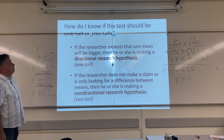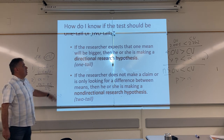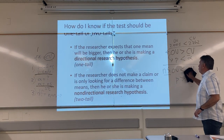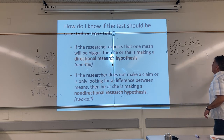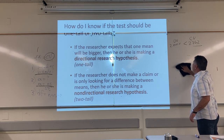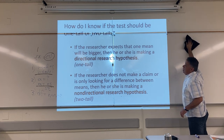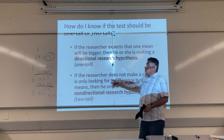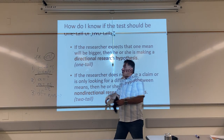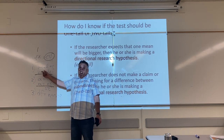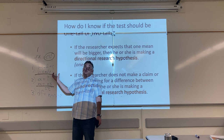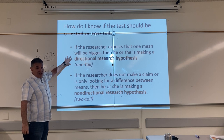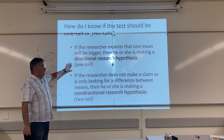How do I know if the test should be one-tail or two-tail? If the researcher expects that one group is going to have a higher score, or a better score, or a bigger score than the other, then he or she is making a directional research hypothesis. And if he or she is making a directional research hypothesis, we do a one-tail test. We need to know three things to look up the critical value; the first is whether it's a one-tail or two-tail test. A directional research hypothesis means a one-tail test.